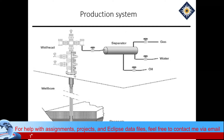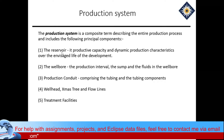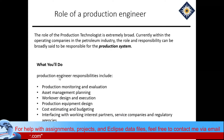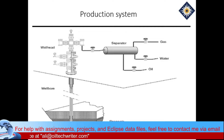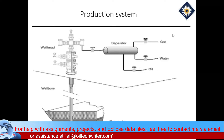When we talk about the production system, we're not talking about drilling anymore — we're talking about the production system. So we have the reservoir, the wellbore with casings, and inside the casing there's tubing, which is the job of the production engineer. Then the wellhead holds all those casings — they are cemented but held at the top by the wellhead. Above the wellhead we put the christmas tree, which has lots of valves. The fourth component is the separator: gas is separated, water is separated, and oil is separated.